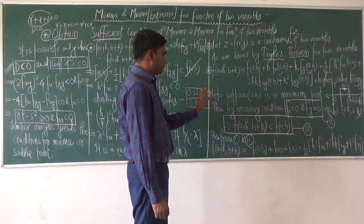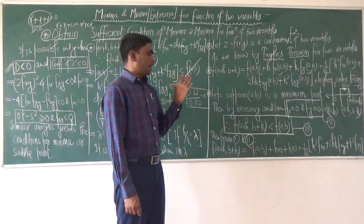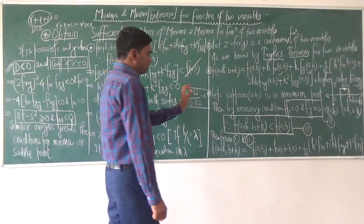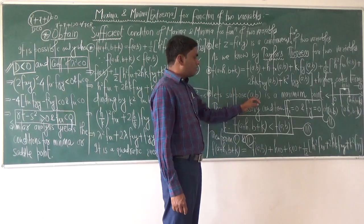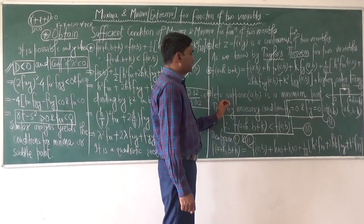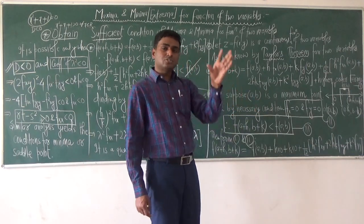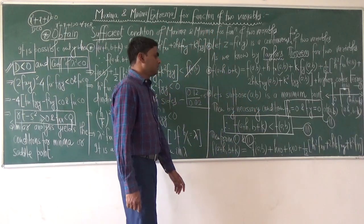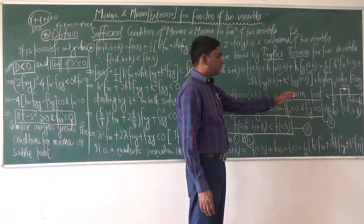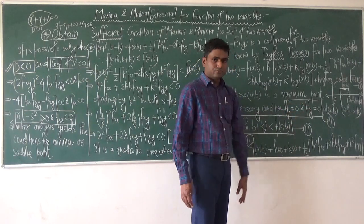For this purpose, let us suppose (a, b) is a maximum point — it may be minimum or saddle point, but for convenience we choose (a, b) as a maximum point, a two-dimensional point at which maximum occurs. By the necessary condition, if (a, b) is a maximum point then fx = 0 and fy = 0. We already know about this.